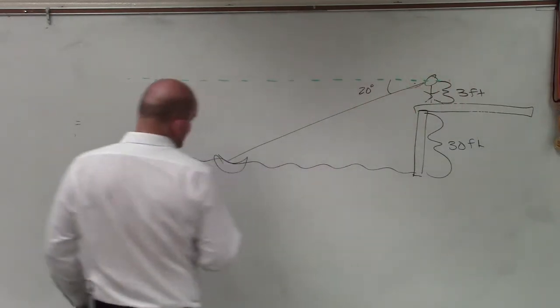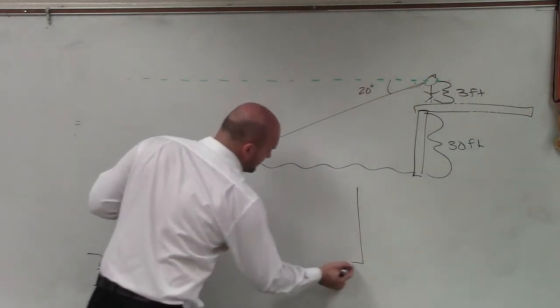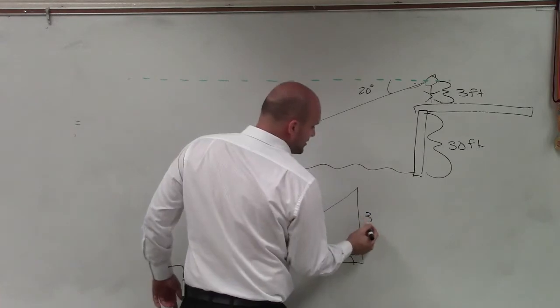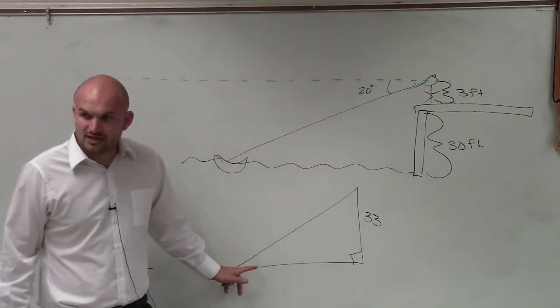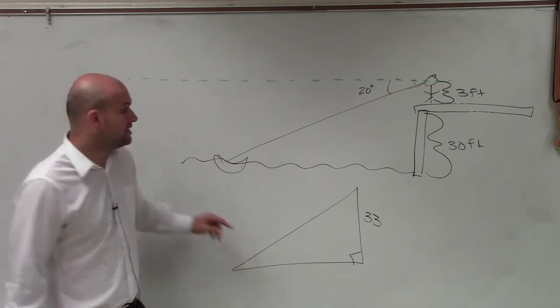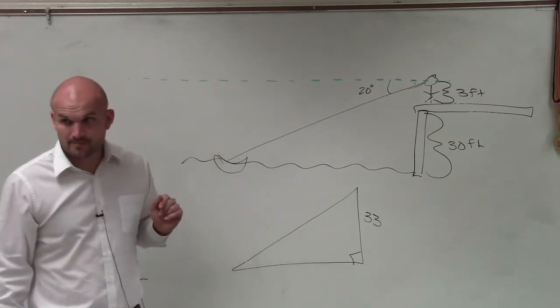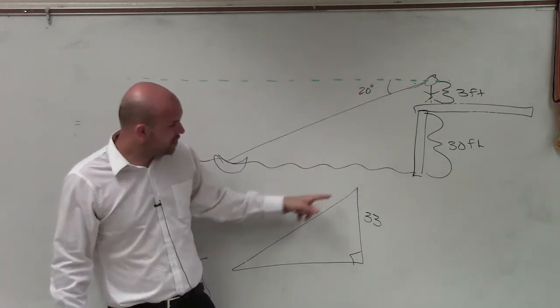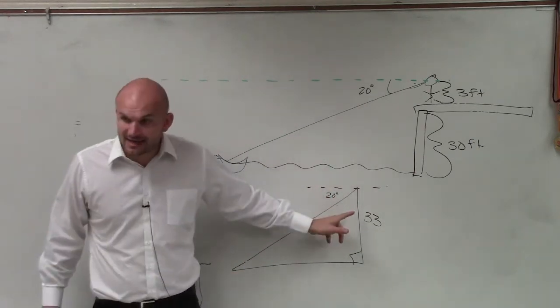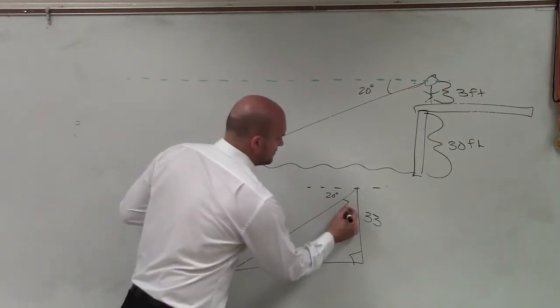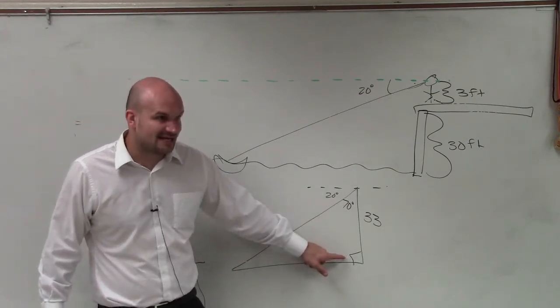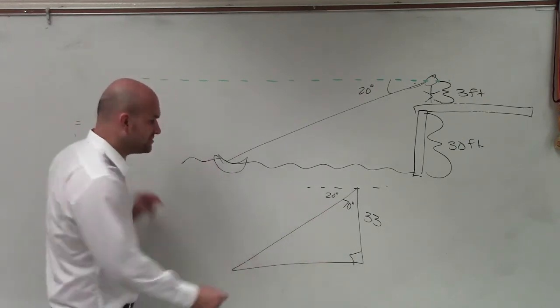So we draw the triangle with the information from the triangle. We know that creates a 90-degree angle. We have 30 plus 3 is 33 feet. Do we know what this angle is? This small little angle? We know that this angle is 20 degrees, right? So if this angle is 20 degrees, does anybody know what that angle is going to be? 70. Does anybody know what this angle is then? 90. Well, 70 plus 90 is 160, so this one has to be 20 as well.